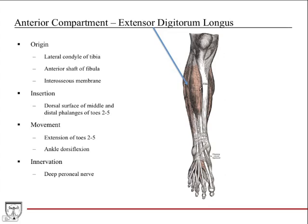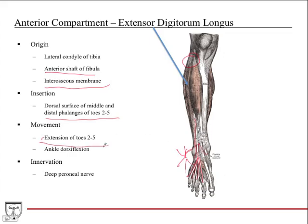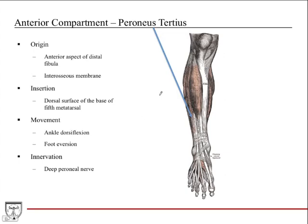The extensor digitorum longus is lateral and deep to tibialis anterior, just lateral to extensor hallucis longus. It originates from the lateral condyle of the tibia, the anterior shaft of the fibula, and the interosseous membrane. Its tendon fans out and attaches to the dorsal surface of the middle and distal phalanges of toes two through five. Muscles contracting pull the toes up — toe extension. It also helps a little with ankle dorsiflexion. Innervation is the deep peroneal nerve.